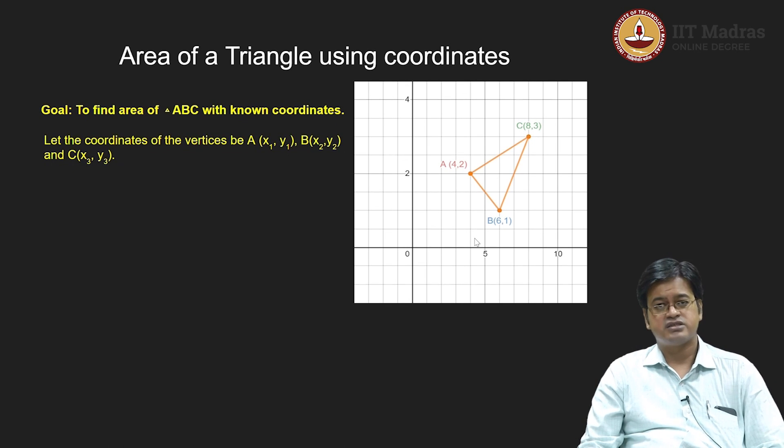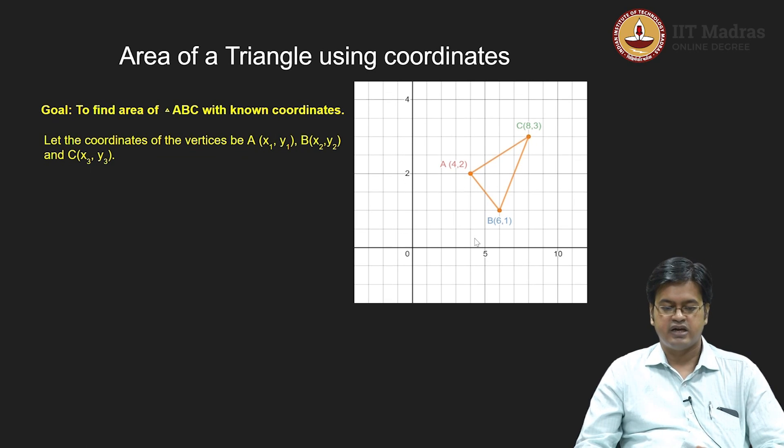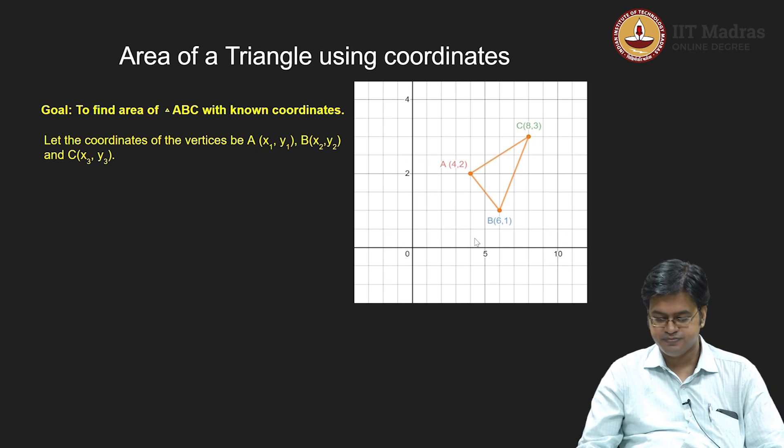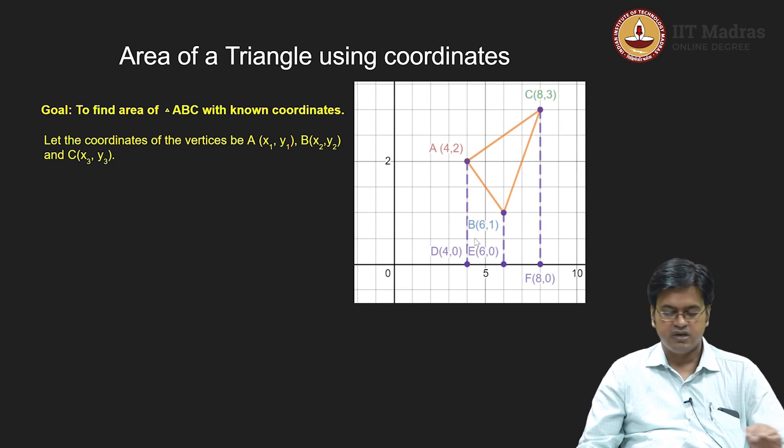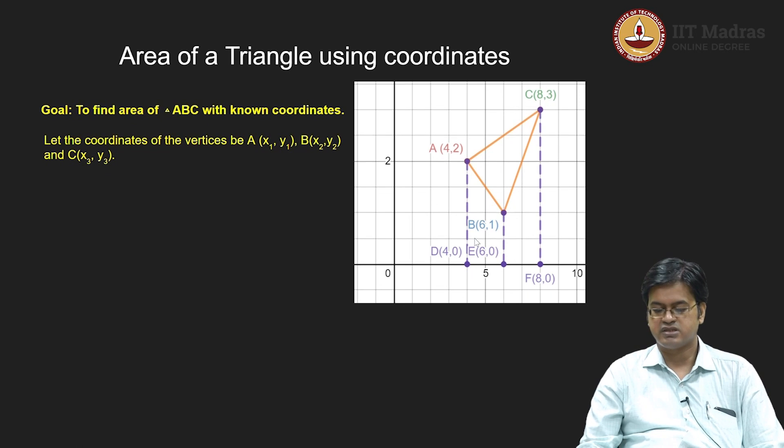Now, whatever I discussed so far everything actually relied on dropping a perpendicular to x axis and finding the area of the geometric object that is formed. In earlier cases it was just a triangle. Now, if we follow that theory then you can easily see that I need to do something like dropping a perpendicular to x axis.